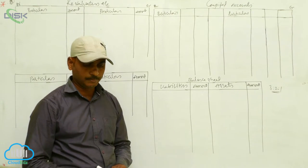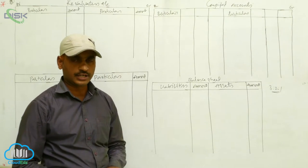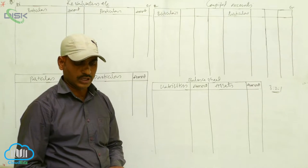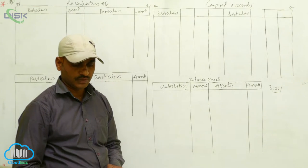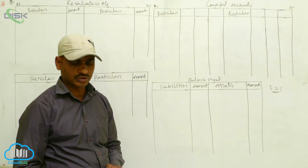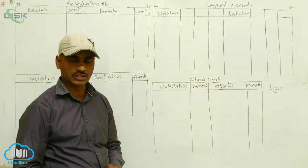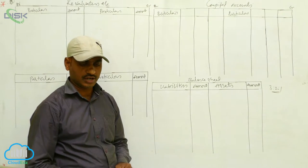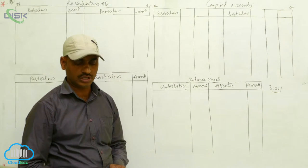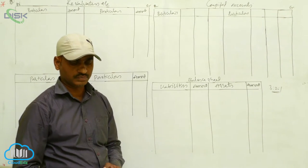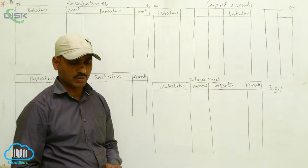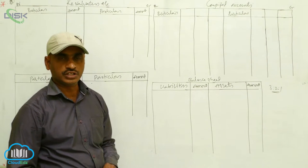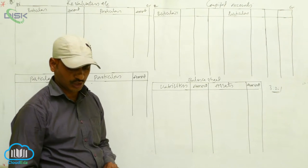The liabilities side shows: creditors 20,000, bills payable 10,000, capital account - Chandra 30,000, Bhaskar 20,000, Rahu 20,000. So Bhaskar and Rahu have equal capital of 20,000 each.